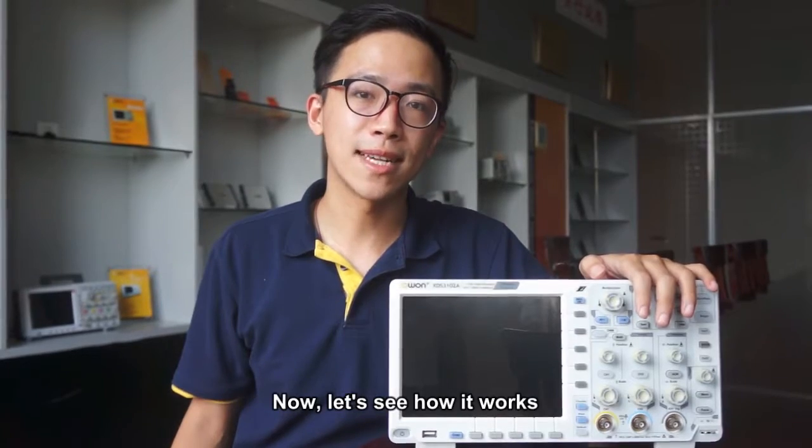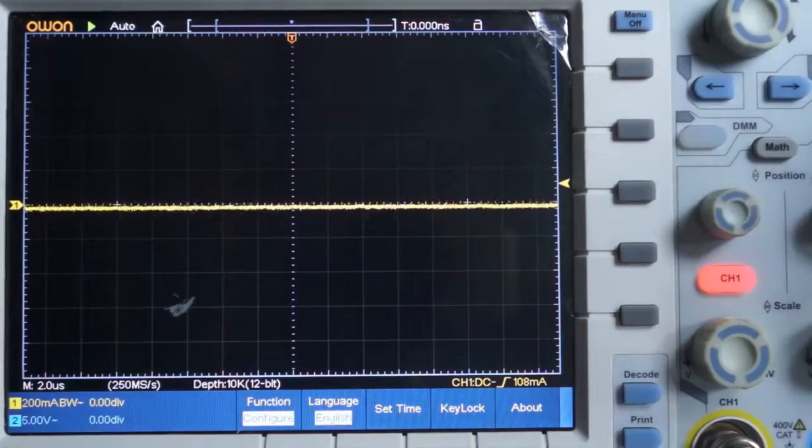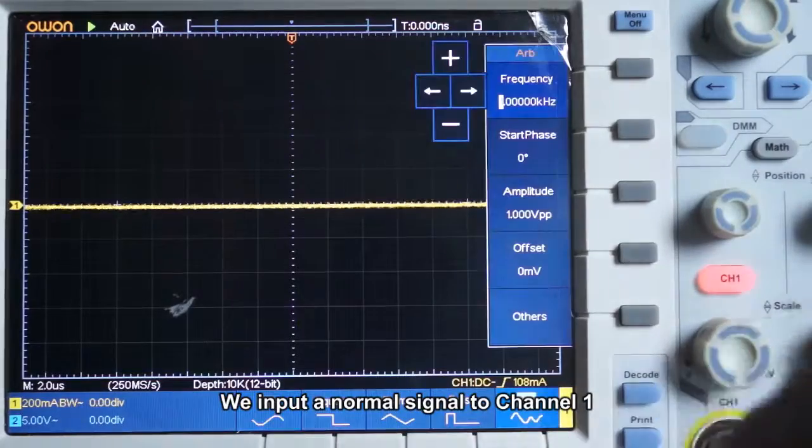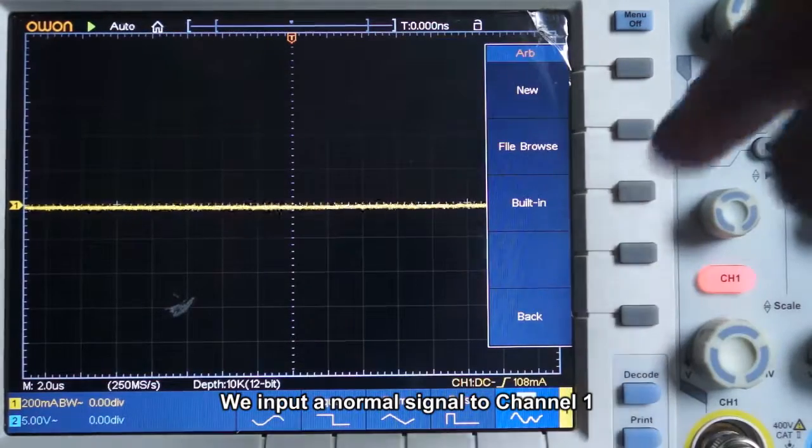Now, let's see how it works. We input the normal signal to channel 1.